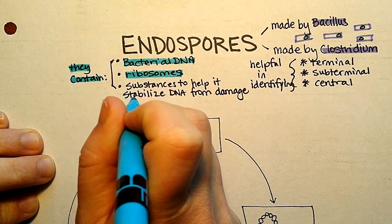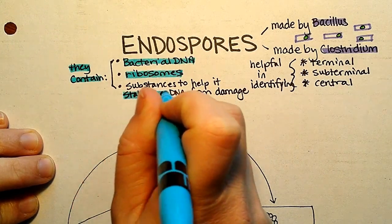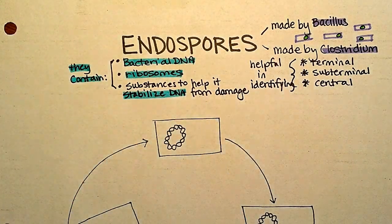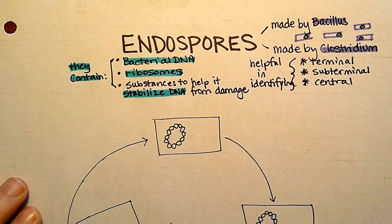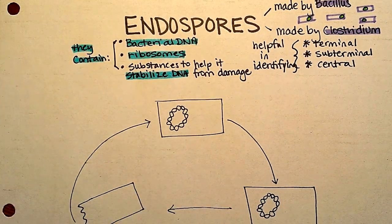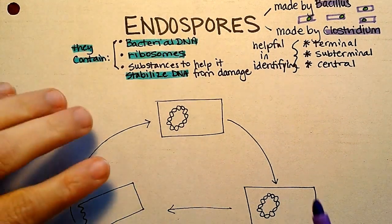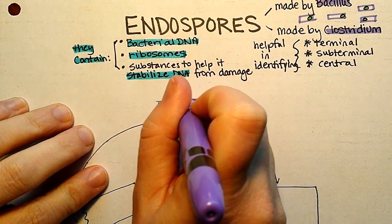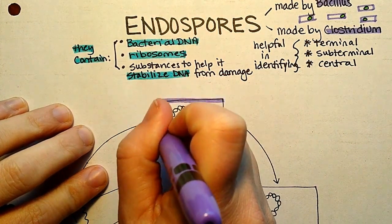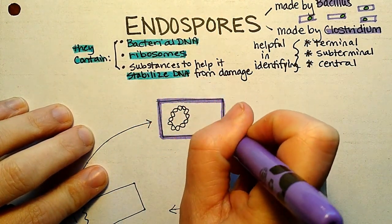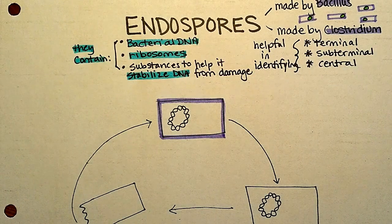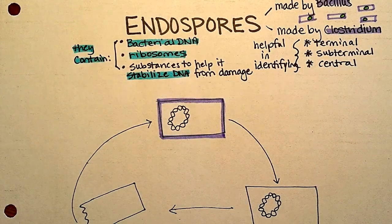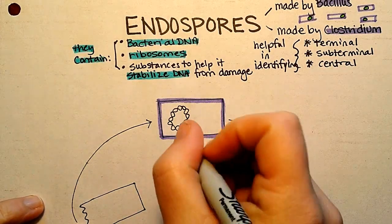So the ingredients of an endospore are DNA, ribosomes, and something to stabilize their DNA — that's why they're going to be so resistant. Now let's look at an example of a bacterial cell that can form endospores. I'm going to draw it rod-shaped and purple because they are usually gram-positive rods. This is the vegetative cell.